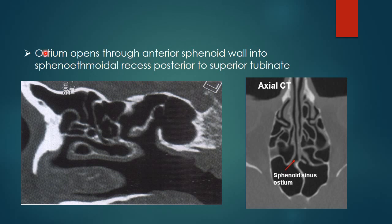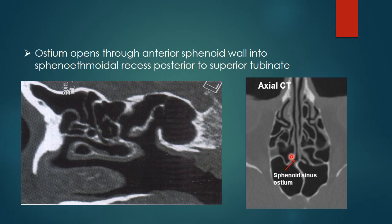The sphenoid sinus drains through the sphenoid sinus ostium, which opens through the anterior sphenoid wall into the sphenoethmoidal recess, which is posterior to the superior turbinate. The sagittal CT image shows the inferior turbinate, middle turbinate, superior turbinate, and sphenoid sinus. The ostium of the sphenoid sinus opens just posterior to the superior turbinate into the sphenoethmoidal recess. In the axial image, both bilateral sphenoid sinuses can be seen opening into the sphenoethmoidal recess.